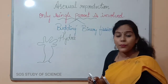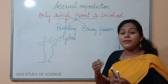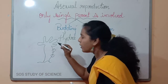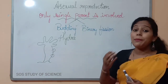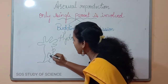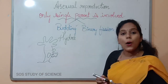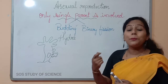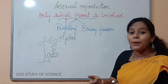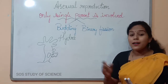How does budding take place in the hydra? In the hydra, due to repeated cell division at one specific site, there will be regenerative cell division. It may be at any place on the hydra. Due to the repeated cell division, a bud develops. There will be a small outgrowth of a new bud on the surface of the hydra. Once this bud completely develops, it detaches, comes out of the body of the parent, and grows itself as a new hydra.